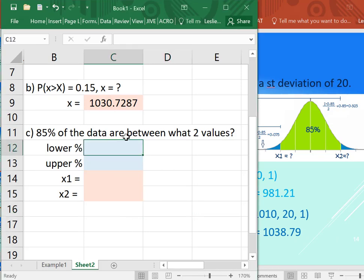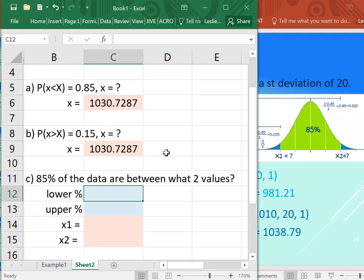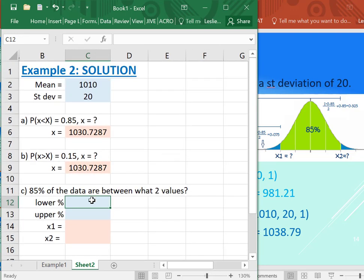So 85% of the data are between what two values, so again, we're dealing with the same example here. So first of all, let's get our lower percent in Excel. So again, it would just be 1 minus the 0.85. Divide that by 2, and the upper would just be that amount plus the 0.85.